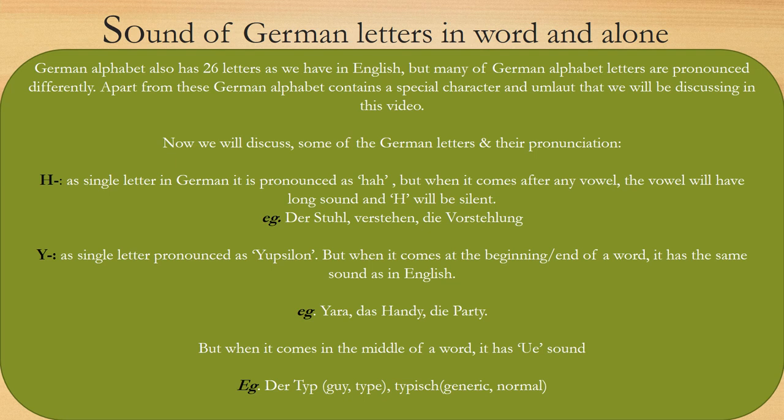Now we have reached the important section of this video: how German letters are pronounced in words or alone. One of the most important skills one should have is communication skills, and pronunciation plays a vital role in communication. The German alphabet also has 26 letters as in English, but many German letters are pronounced differently. Apart from this, the German alphabet contains special characters and umlauts, which we will be discussing in this video.